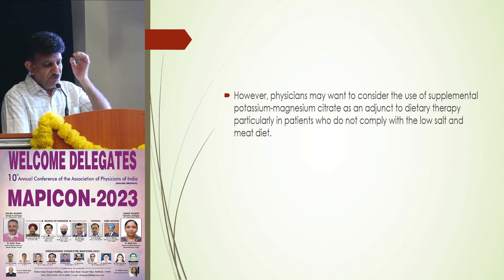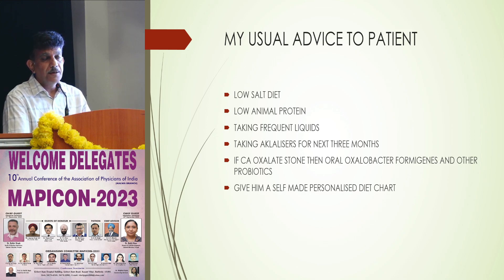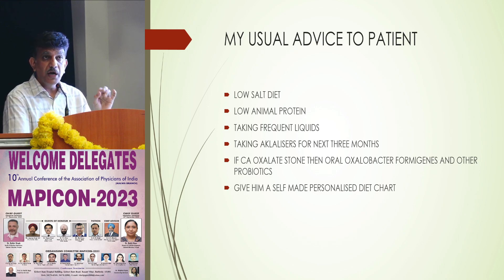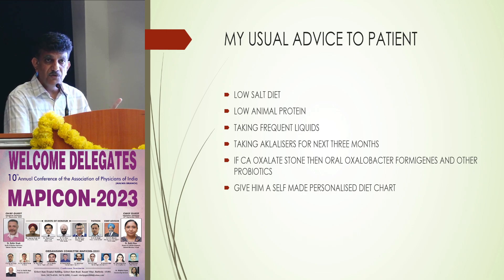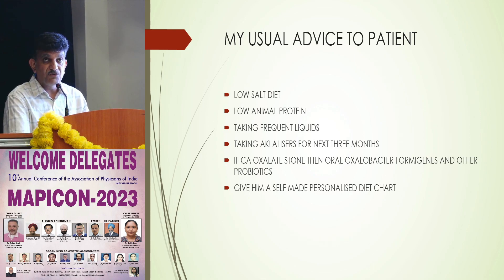Physicians can consider supplemental potassium citrate or potassium magnesium, which come in syrup form. My usual advice to a patient who has undergone stone surgery is: number one, nobody guarantees that stone recurrence won't happen; number two, you are responsible for preventing your own stone — don't blame the surgery. It is related to what you eat, where you live, and your lifestyle. Take low sodium, low animal protein, avoid junk food, take physical exercise, practice yoga, take frequent liquids at intervals, take alkalisers for at least 3–4 months, and consider Oxalobacter formigenes or other probiotics for 4–5 months.